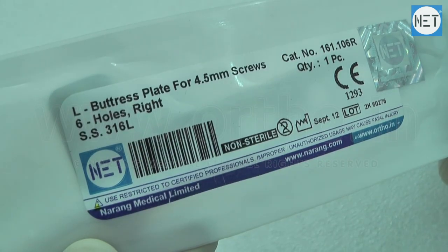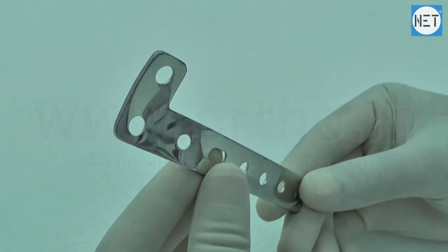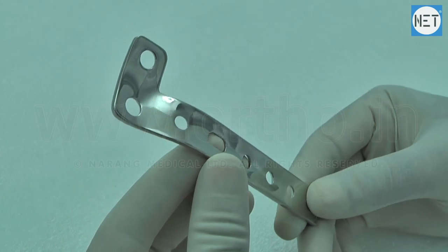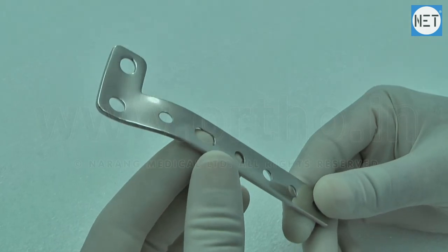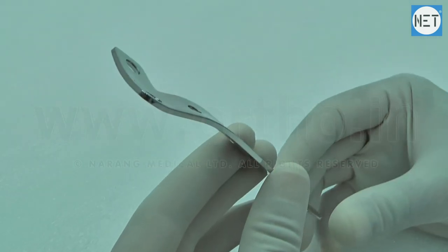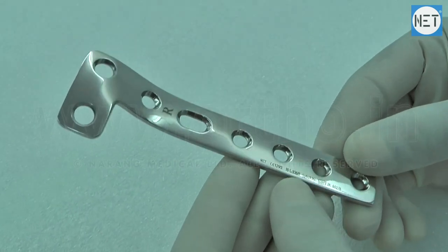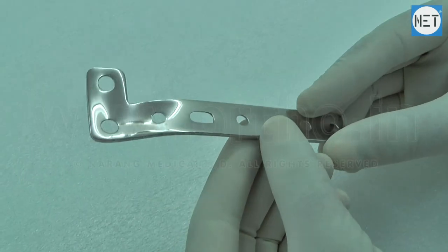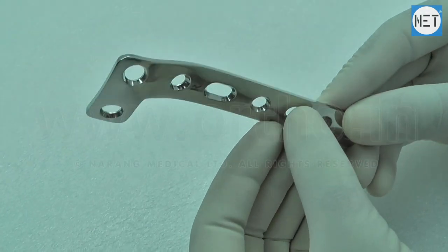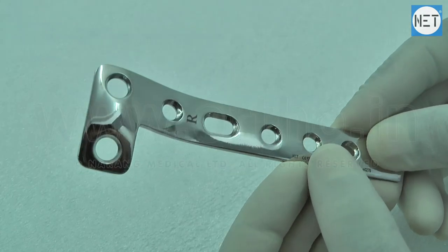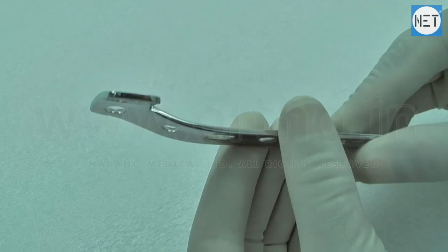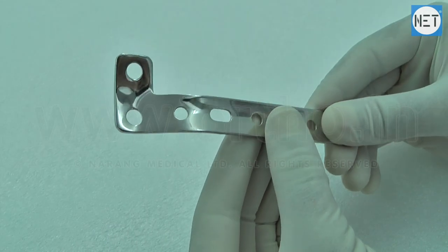NET brand L Buttress Plates 4.5mm are indicated for fractures at the proximal or distal ends of long bones, including fractures of the femoral condyle, tibial plateau, distal tibia, and proximal humerus. The buttress head easily fits over the condyle region of long bones.